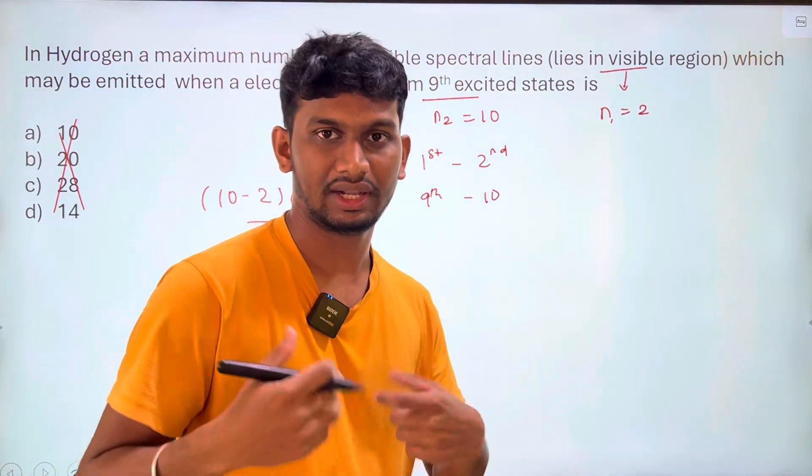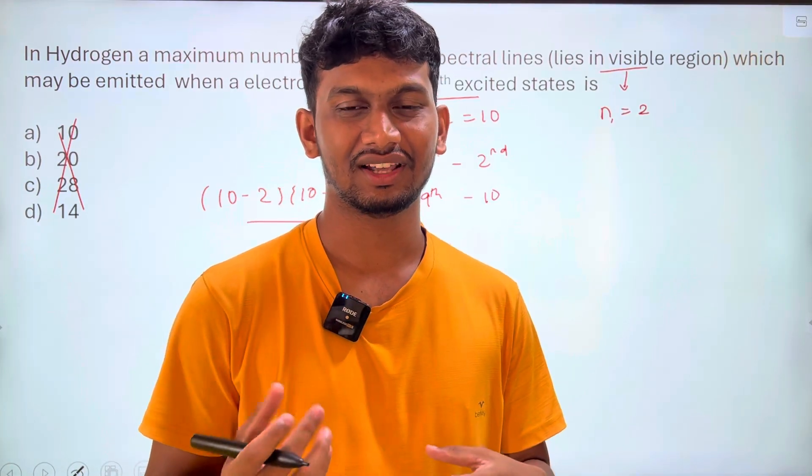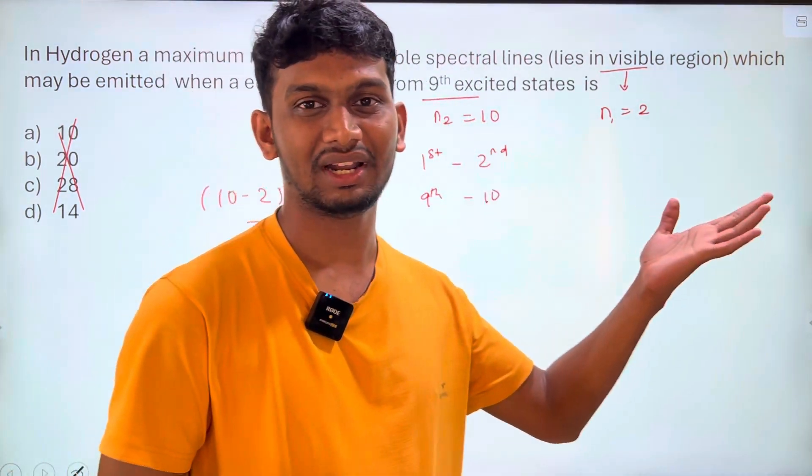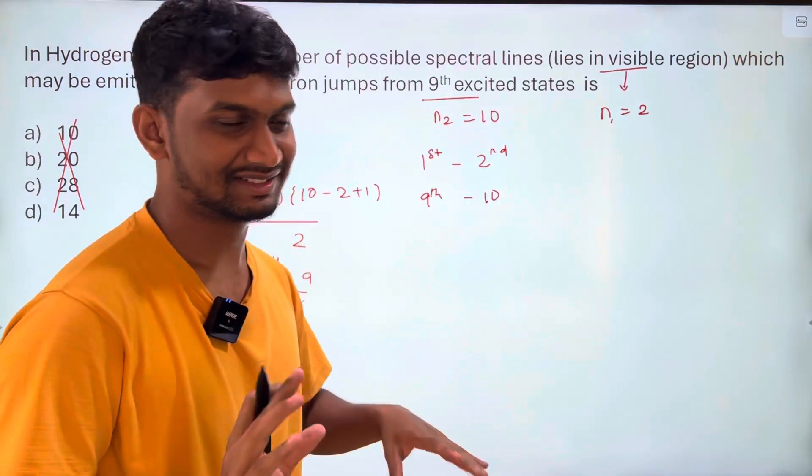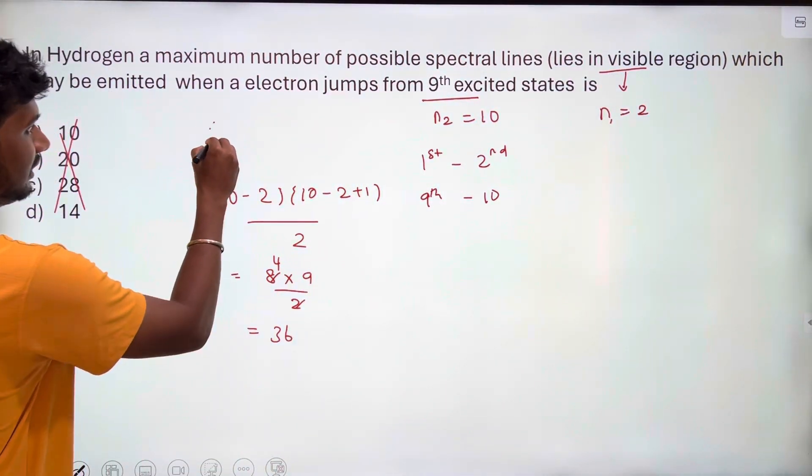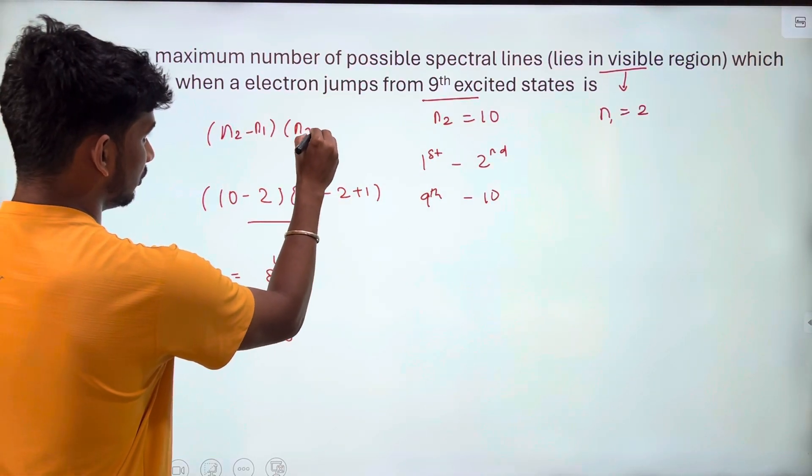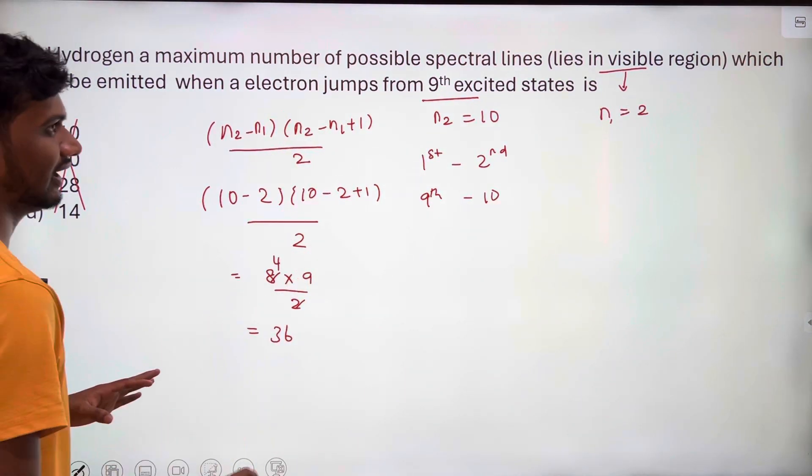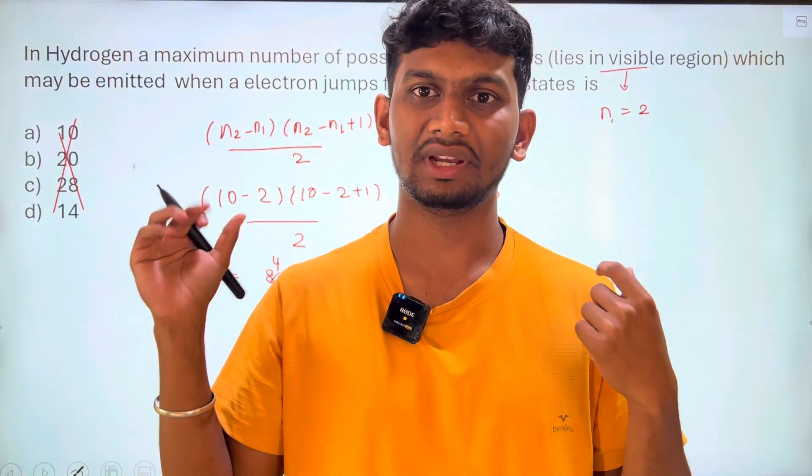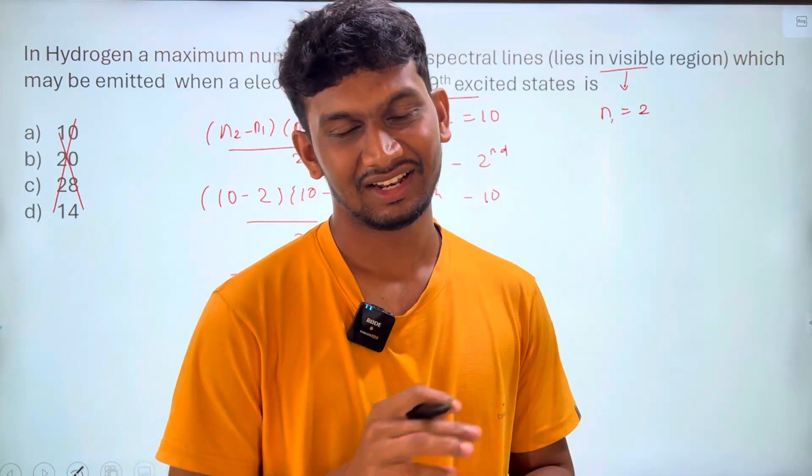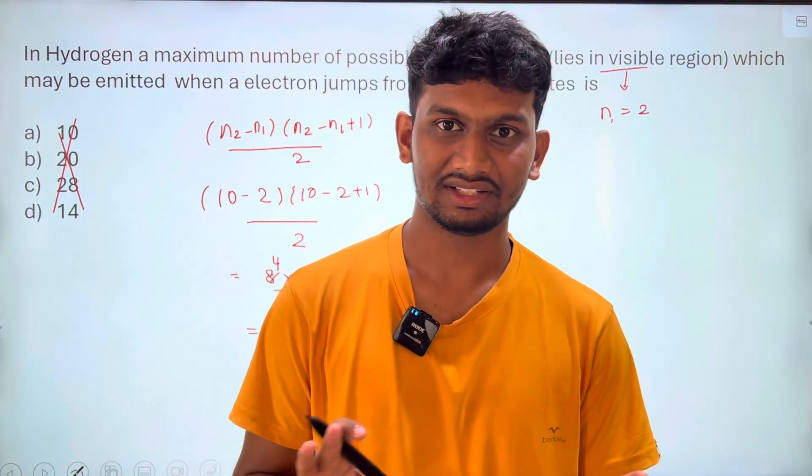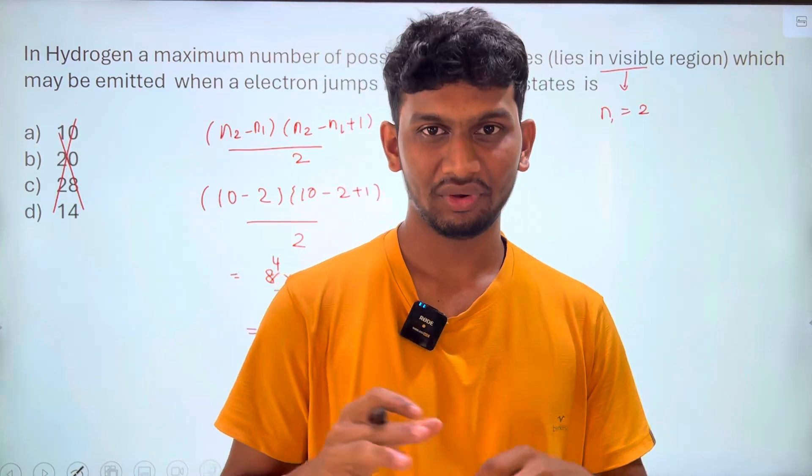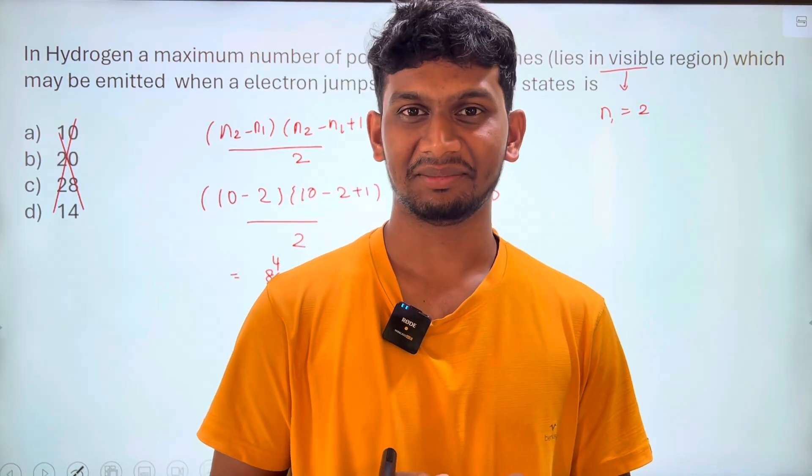And I'm sorry. I'm correcting in the solution. The formula is again also right, n2 minus n1 into n2 minus n1 plus 1 by 2. So again I'm sorry I made a mistake. I'm not happy for that, and I'm appreciating that student who emailed me to notify the error. Hope you enjoy this video. Like, share, comment, subscribe. Thank you.